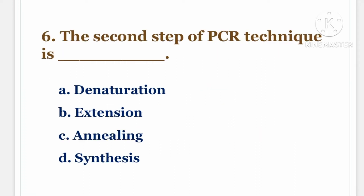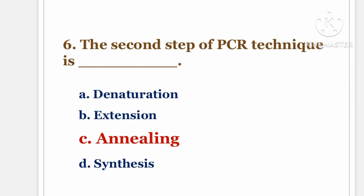Next question. The second step of PCR technique is DASH. The options are A. Denaturation, B. Extension, C. Annealing, D. Synthesis. The answer is C. Annealing.